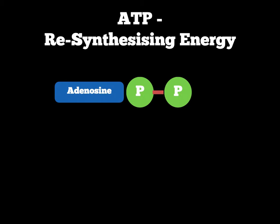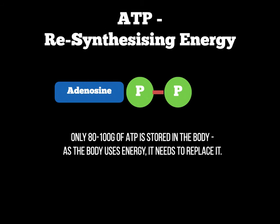Once the exothermic reaction has occurred and we've released the last phosphate from ATP, what we're left with is ADP. The problem with that is we can only store 80 to 100 grams of ATP in the body, because as the body uses the energy we need to replace it. So as we have ATP, we release that energy and it becomes ADP again — we've got to get that phosphate back. We need to restore ATP, and when we're restoring ATP from ADP, we call that ATP resynthesis.